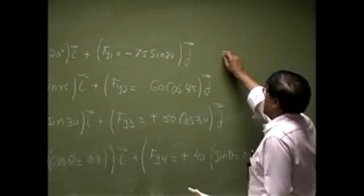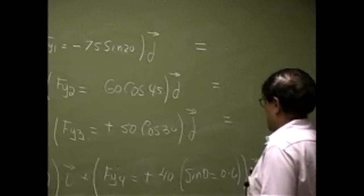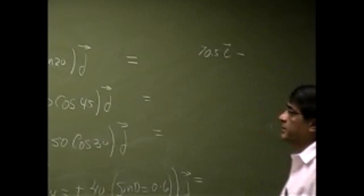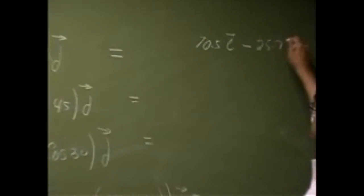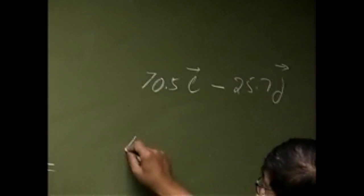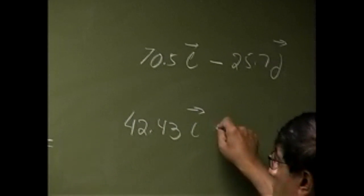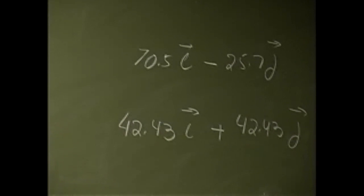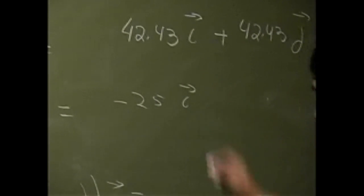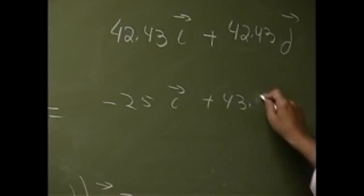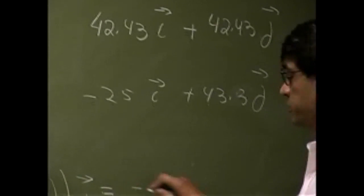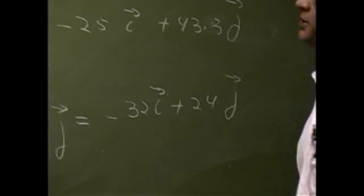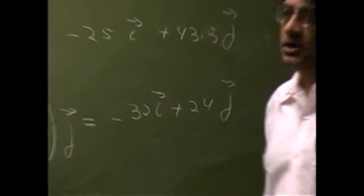Going through the calculations, you get: F1 = 70.5i − 25.7j; F2 = 42.43i + 42.43j; F3 = −25i + 43.3j; F4 = 32i + 24j. Those are the actual numbers you get out of the equations.